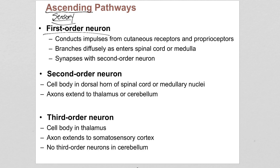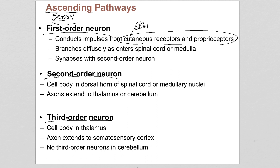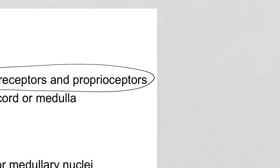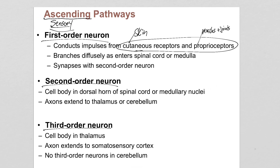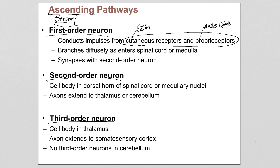These neurons — first, second, third order — all this is really saying is that to get from a sensory receptor, cutaneous receptors and proprioceptors — cutaneous meaning we're in skin, so think touch receptor or thermoreceptor for temperature — and proprioceptors are sensory receptors in muscles and joints that give your brain information about where your body is moving through space. In order to get from those receptors up to the brain, we have to take this first order neuron into the spinal cord.